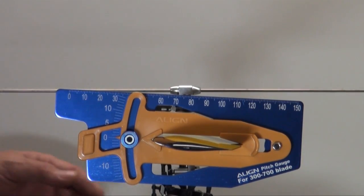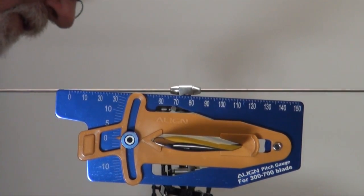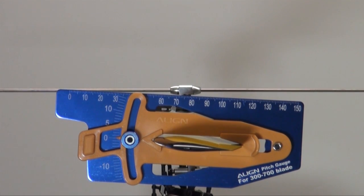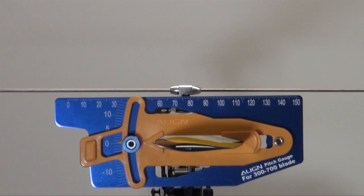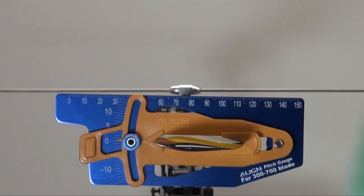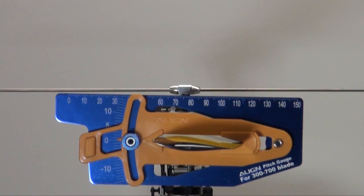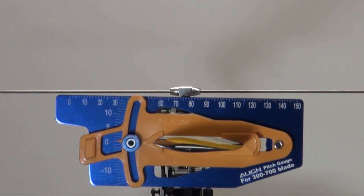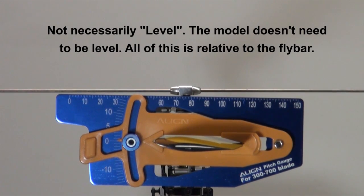Now turn on your transmitter, and then turn on your model and let the BeastX initialize. Now I've already got this machine set up, so we should be seeing that fly bar should be pretty level. Actually I'm probably not right at zero.